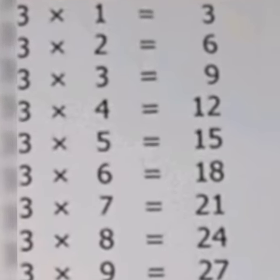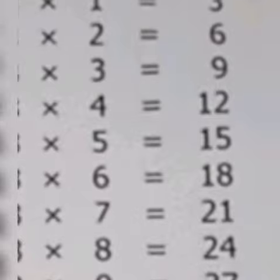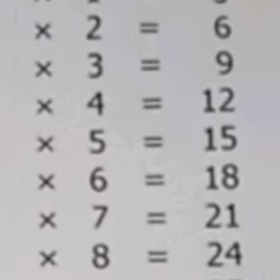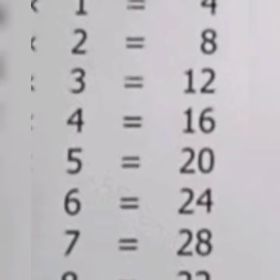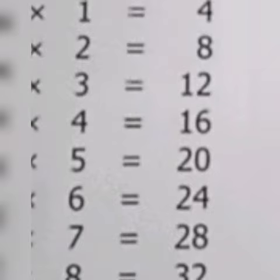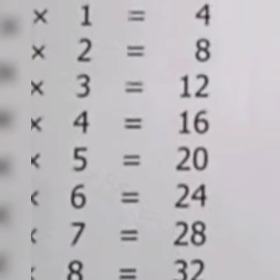3 5s are 50, 3 6s are 8, 3 7s are 21, 3 8s are 24, 2 9s are 27, 3 10s are 30.